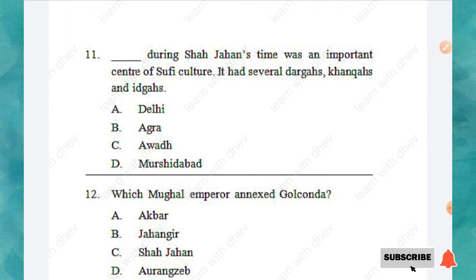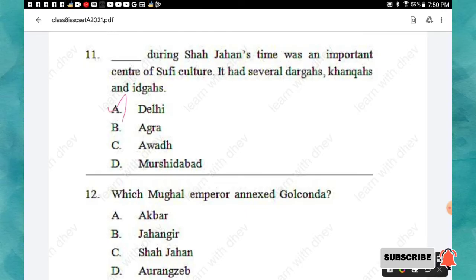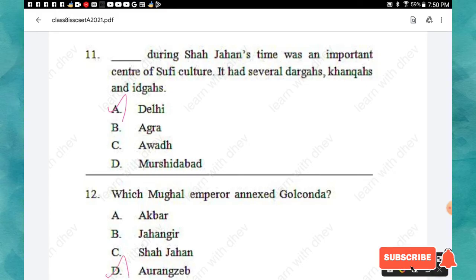Question 11: During Shah Jahan's time, ___ was an important center of Sufi culture and had several dargahs, khanqahs, and idgahs. Options: Delhi, Agra, Awadh, Murshidabad. The right answer is option A: Delhi. Question 12: Which Mughal emperor annexed Golconda? Options: Akbar, Jahangir, Shah Jahan, Aurangzeb. The right answer is option D: Aurangzeb.